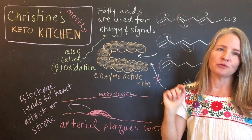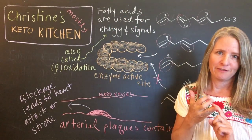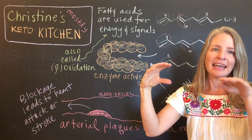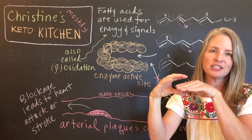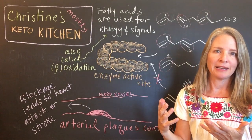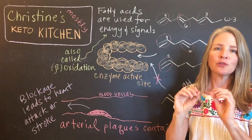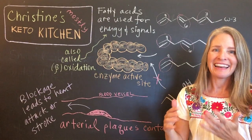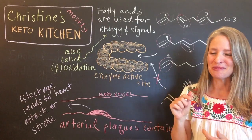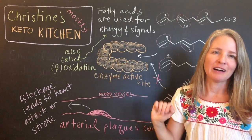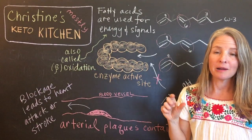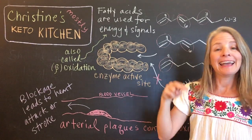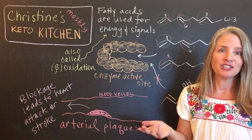Fats can be used both as energy and for signaling. Either way, there's going to be some type of enzyme with an active site and the fatty acid is going to fit in there just perfectly, and then the reactions take place. When it's for energy, you're going to get rid of those double bonds, turn it into a saturated fat, and then it's just going to go through what we call fatty acid oxidation — beta oxidation. That's how fats get turned into energy: they get broken down into that little two-carbon chunk called acetyl-CoA, and then that goes on to create chemical energy known as ATP.